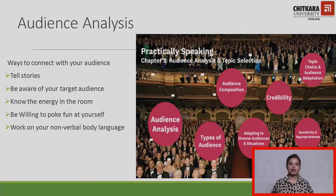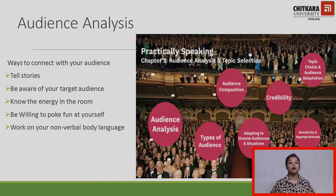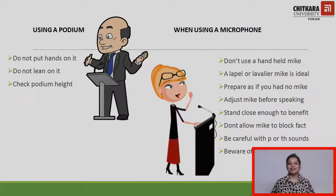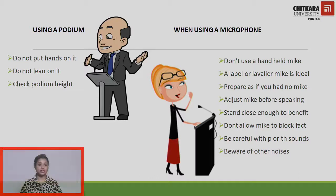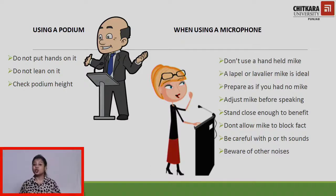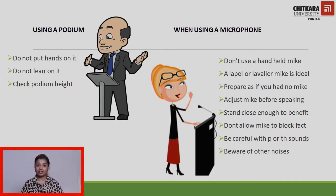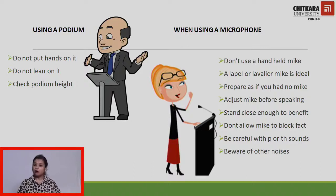There are various kinds of audiences you might find in a hall, and you must adapt as a speaker to connect with them. Note that a podium is very different from a lectern — a podium is a raised platform, while a lectern is the stand you speak from. Do not put your hands on the lectern or lean on it. Check that the height of the lectern matches yours and that you can establish eye contact with the audience.